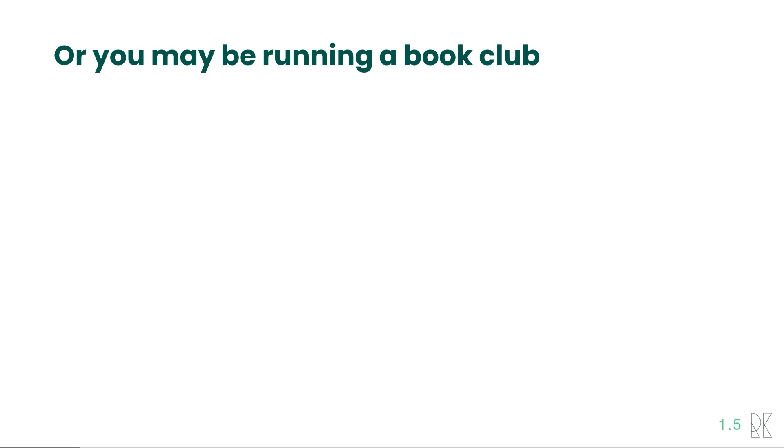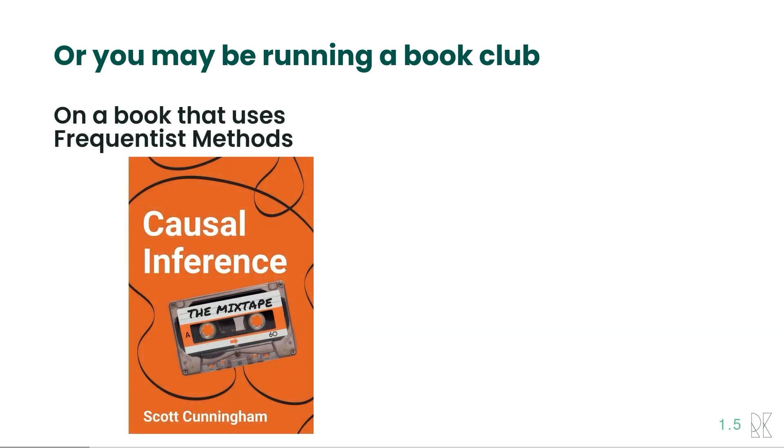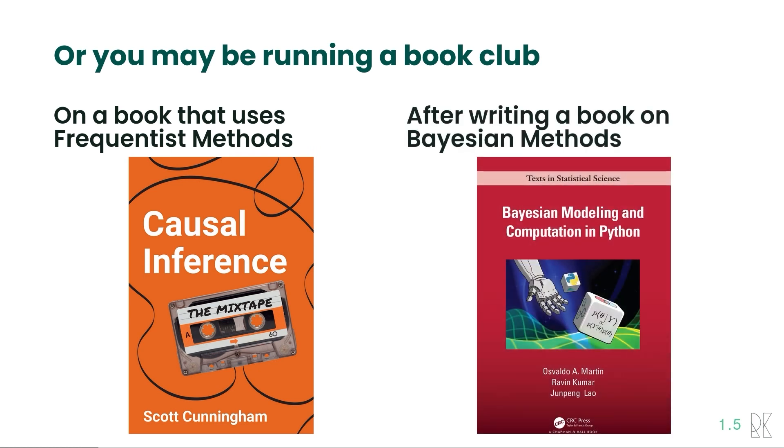Or you may be running a book club and you happen to pick a book that uses frequentist methods, but you wrote a book that uses Bayesian methods, which is where I'm at and why I'm recording this video. The people in my book club are wondering why I would pick a frequentist book when I seem to be so Bayesian that I would write my own book on it.